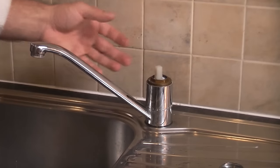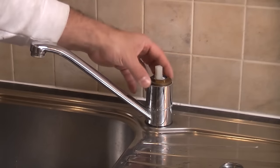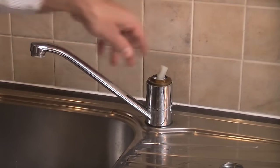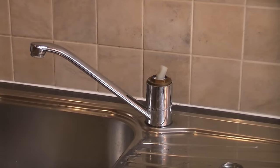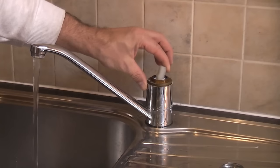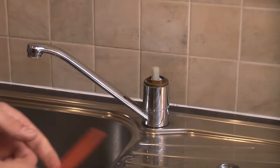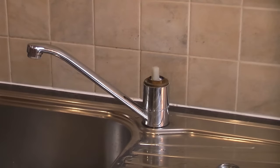Before we go any further, I'm now going to turn the water back on and just check for any leaks before we fully assemble the tap. So you can see that has worked. Now I'll just turn off the tap. So now that we know that is working okay, we can now reassemble the tap fully.